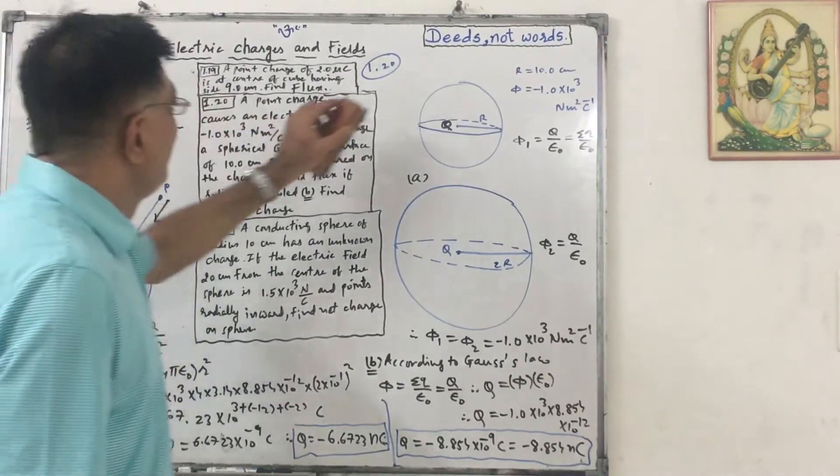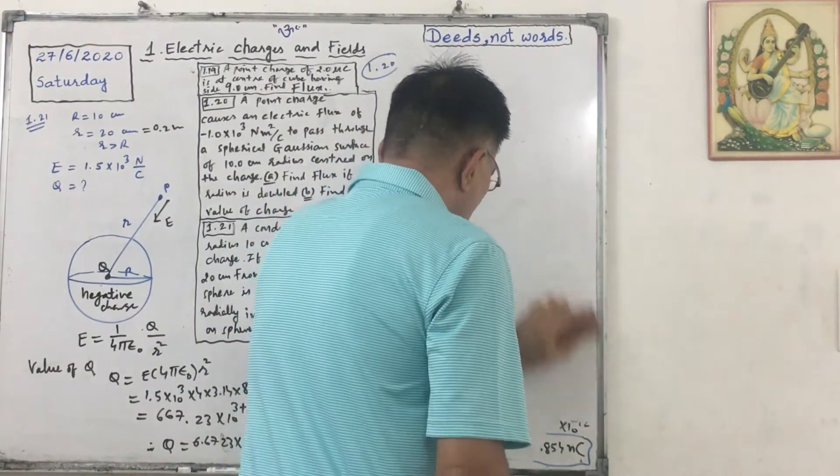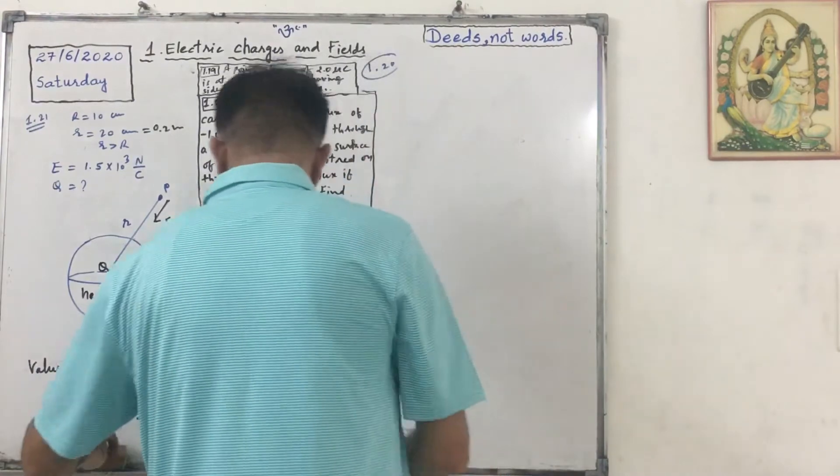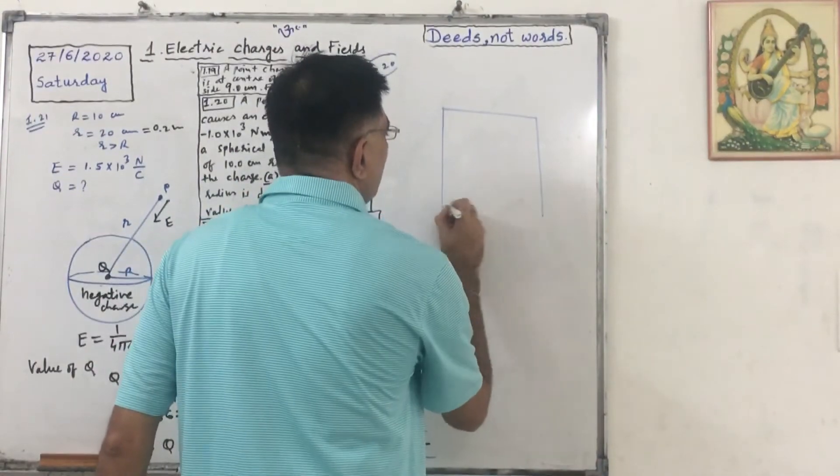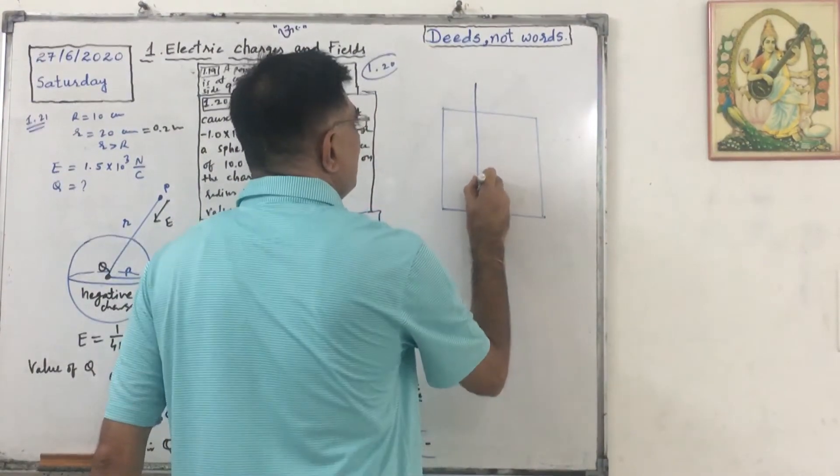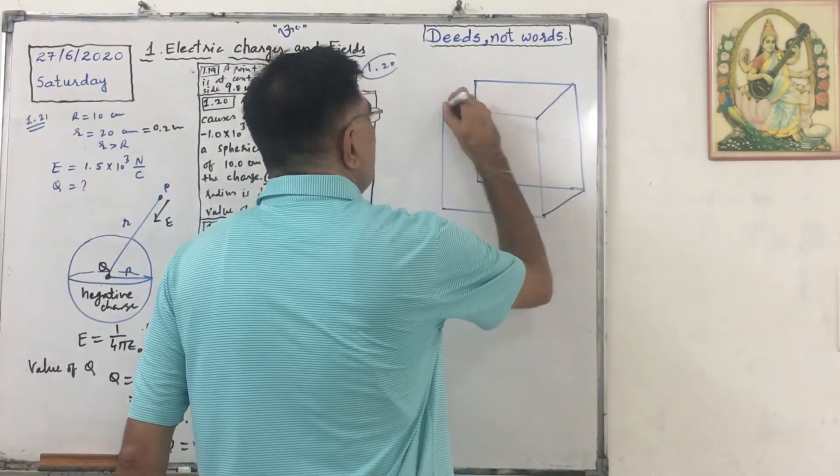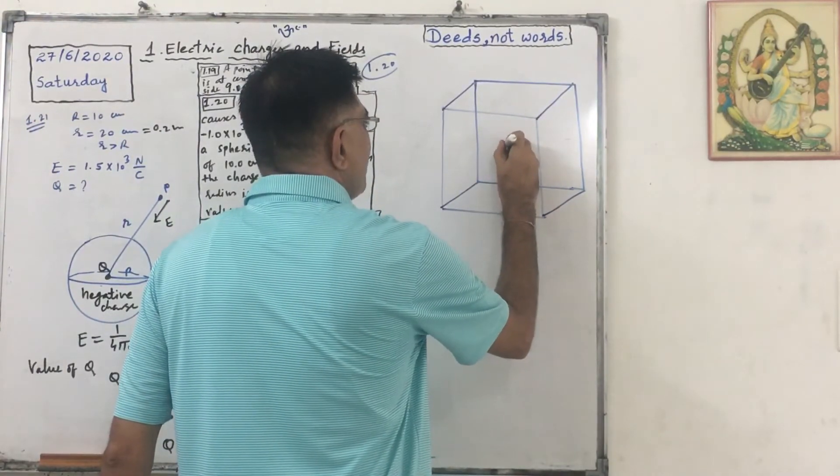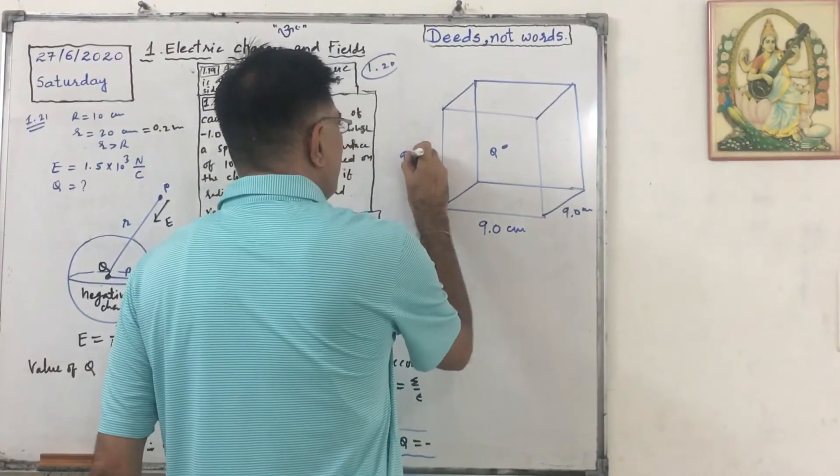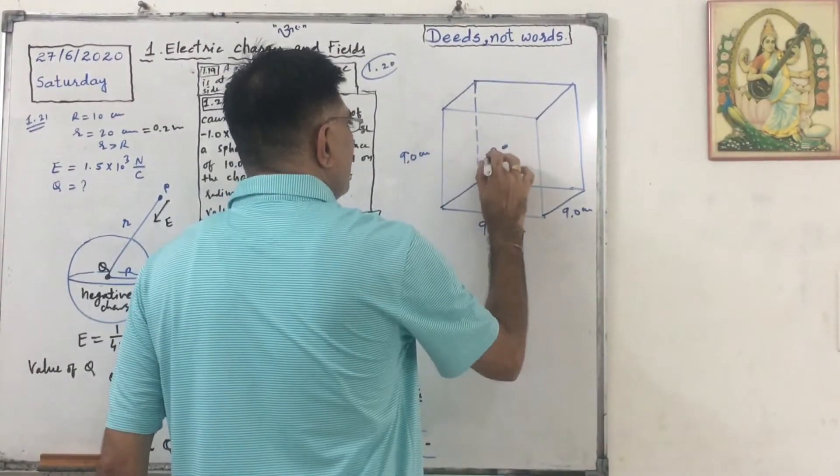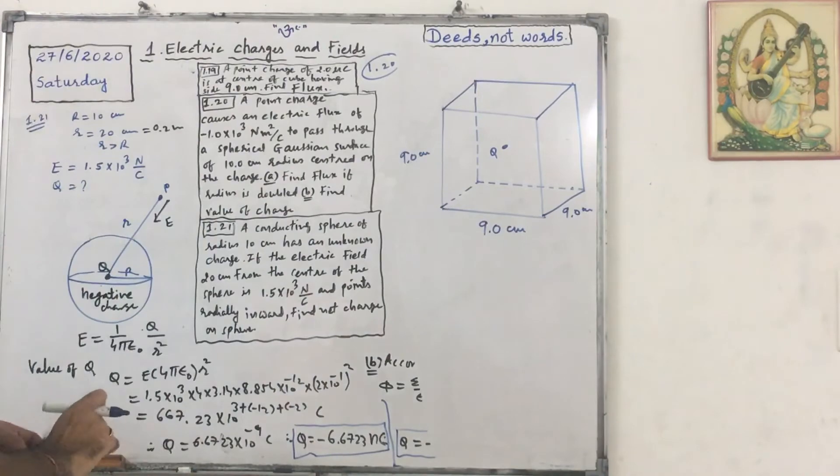And the last is 1.19. A point charge of 2 micro coulomb is placed at the center of a cube. Here it is a charge, the size of the cube is given. We have to find out the flux. Very easy.